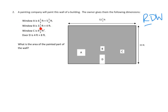Window B is 3 and one-eighth feet by 4 feet. Window C also looks pretty small. For window C, they tell us the area of that window — they don't give us the dimensions. They just say it's 9 and one-half feet squared. That's good; we don't need to know the dimensions, and they've done that math for us. Then doorway D is 4 feet by 8 feet — that's pretty easy. So, what is the area of the painted part of the wall?